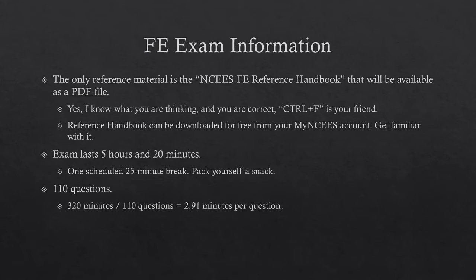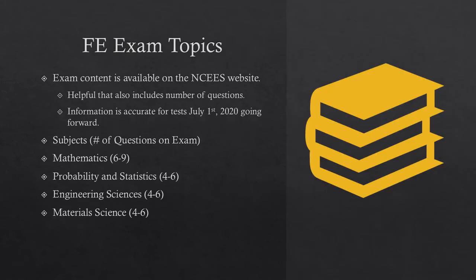NCEES publishes all the exam topics, and it really isn't a surprise about what you're going to be tested on. They do a pretty good job of communicating the topics and how many questions per exam topic. This information is accurate for tests July 1st, 2020 going forward. Up until July 1st, 2020, there's a different number of subjects and questions per subject. If you're taking the test after July 1st, 2020, this is accurate. If sooner, you should go to the NCEES website and look for FE chemical exam topics to make sure you're getting the most updated information.